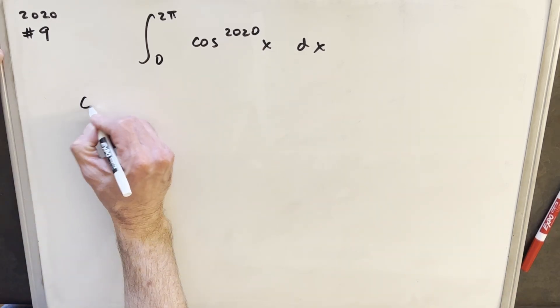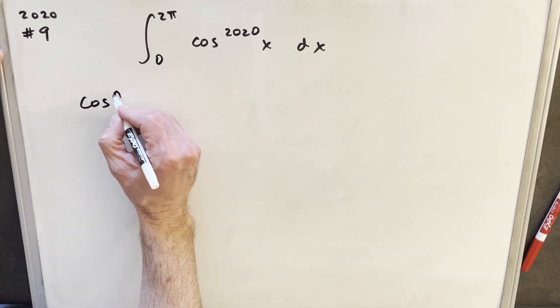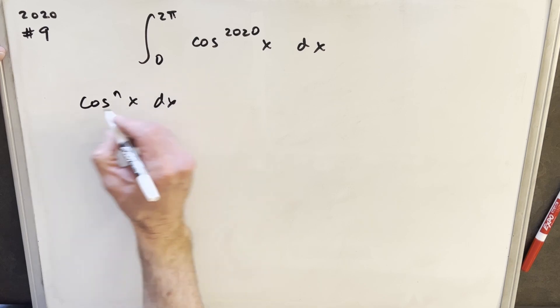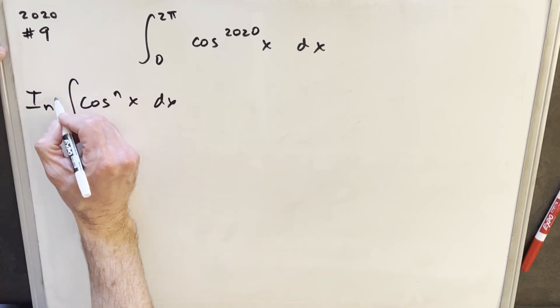So let's just look at our generic formula for power reduction for cosine. So we'll have cosine n of the x where in this case n is 2020 and I'm just going to call this thing i sub n.